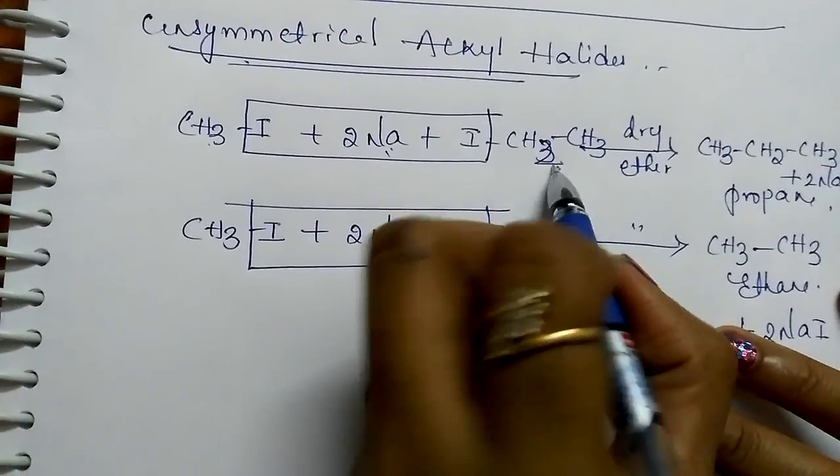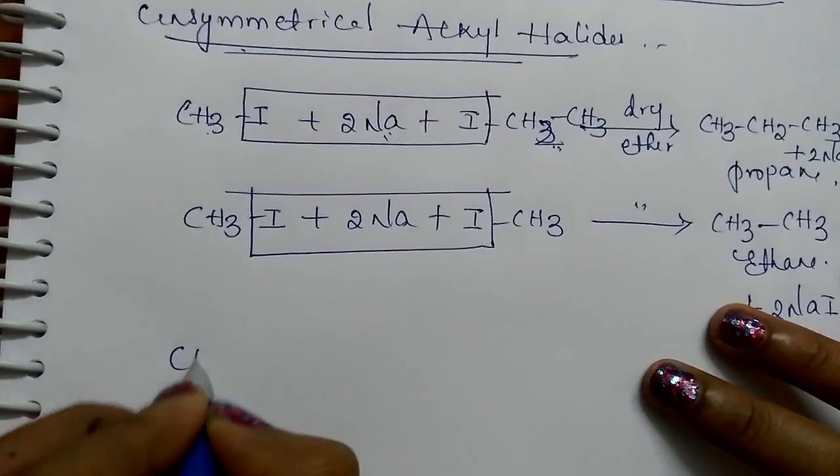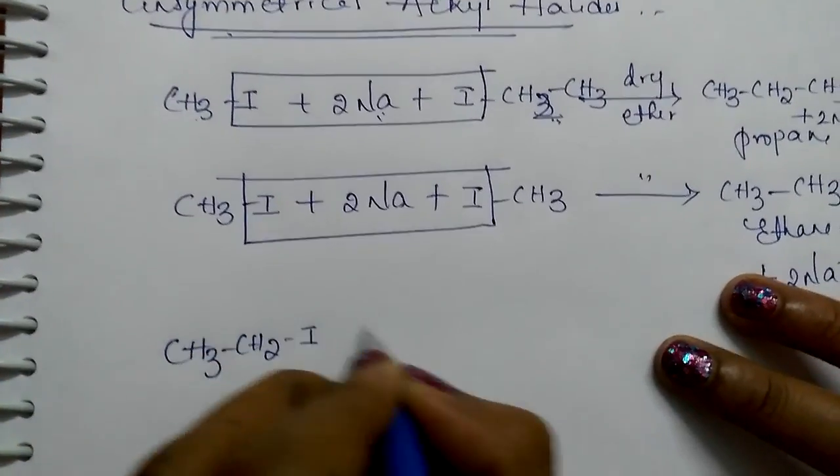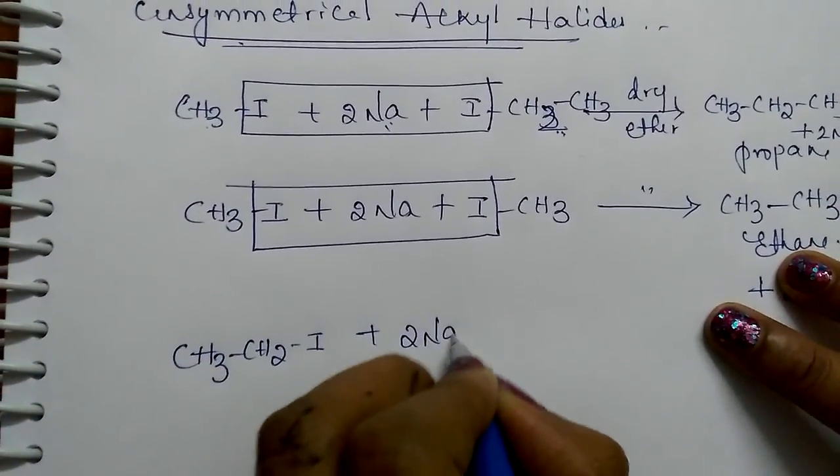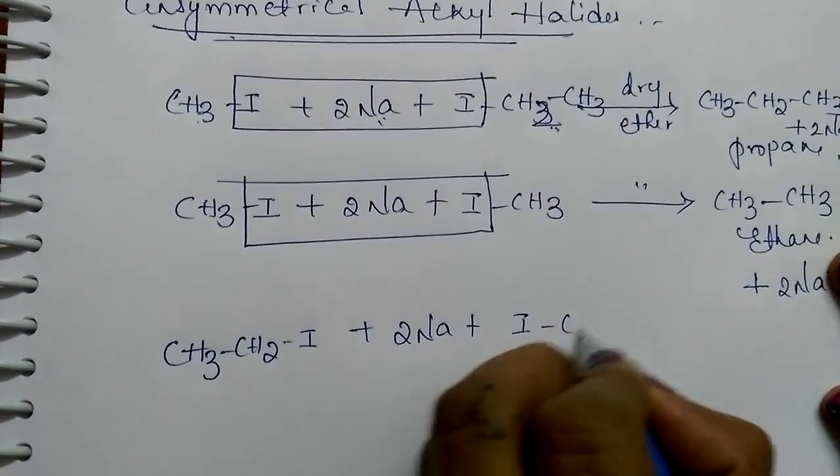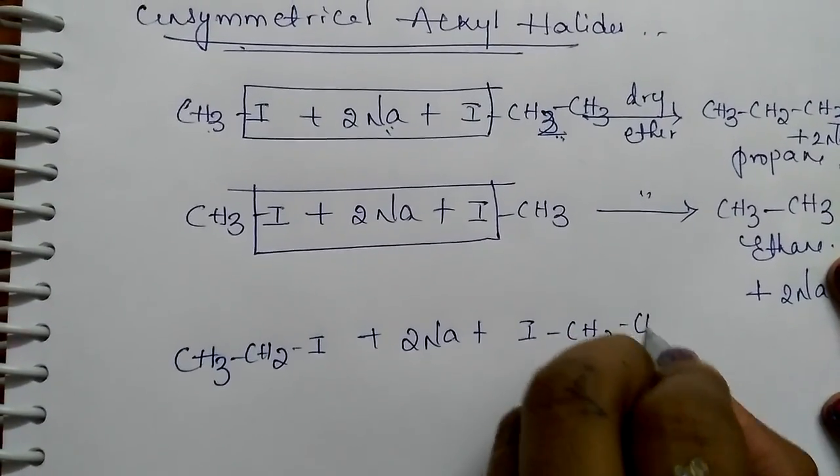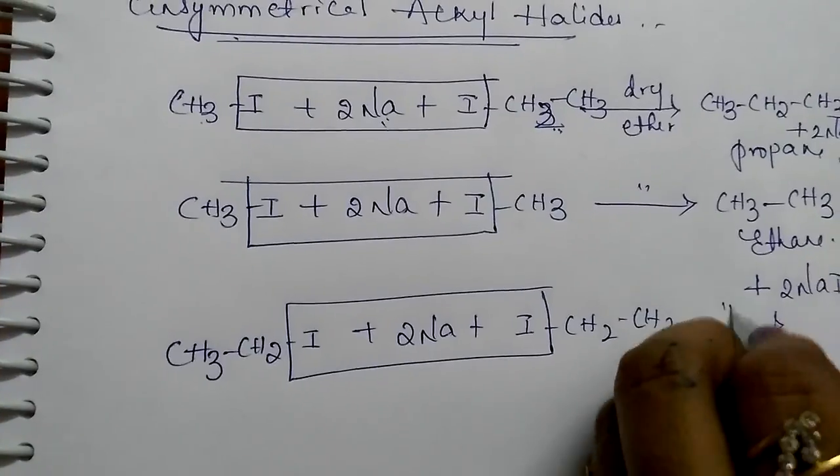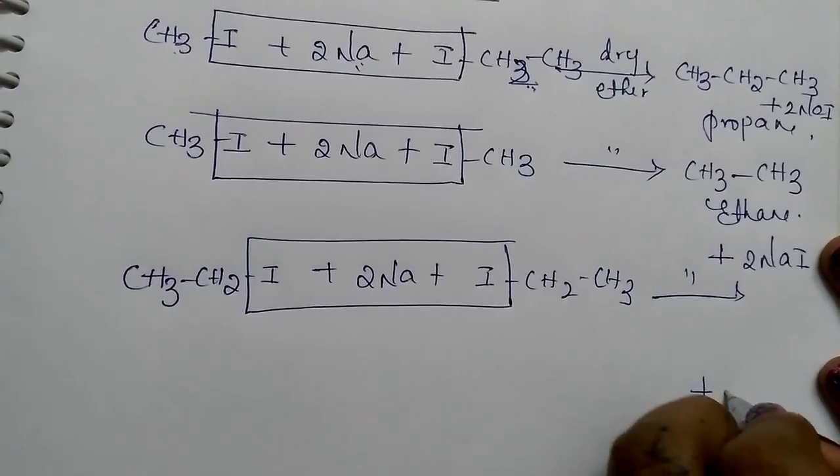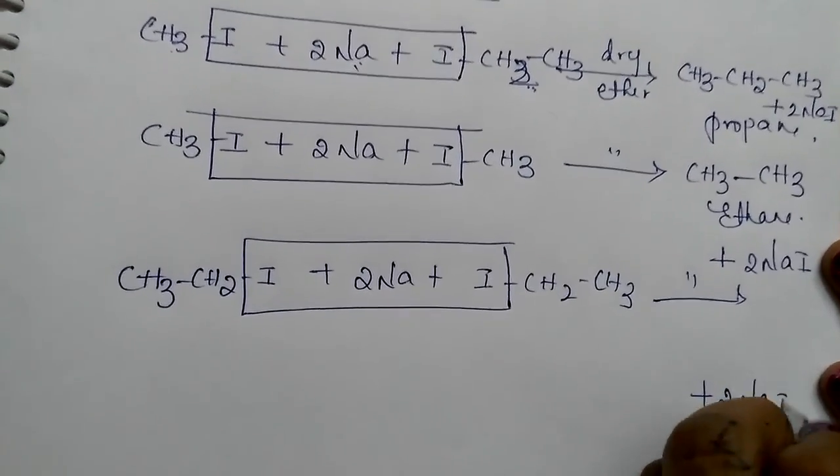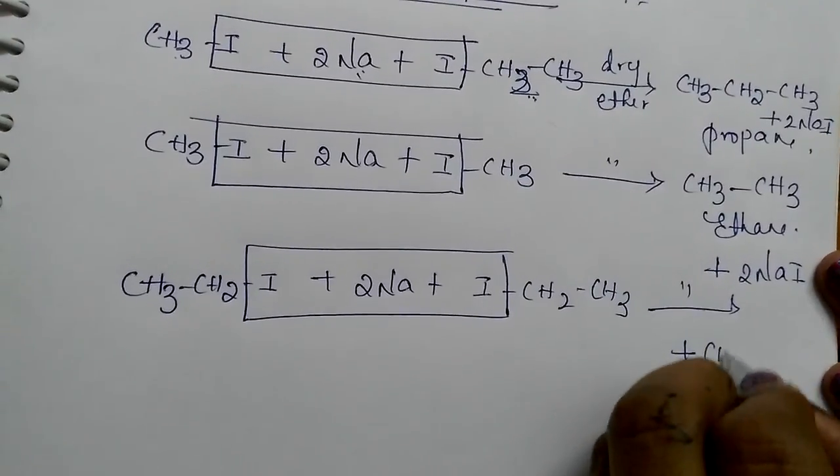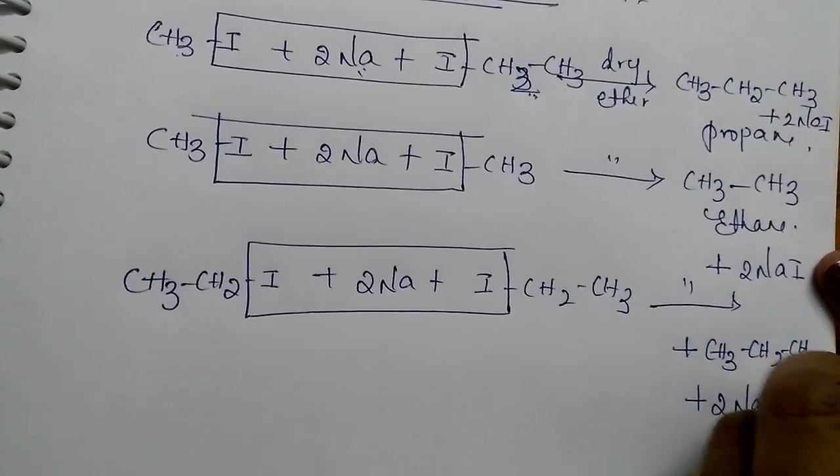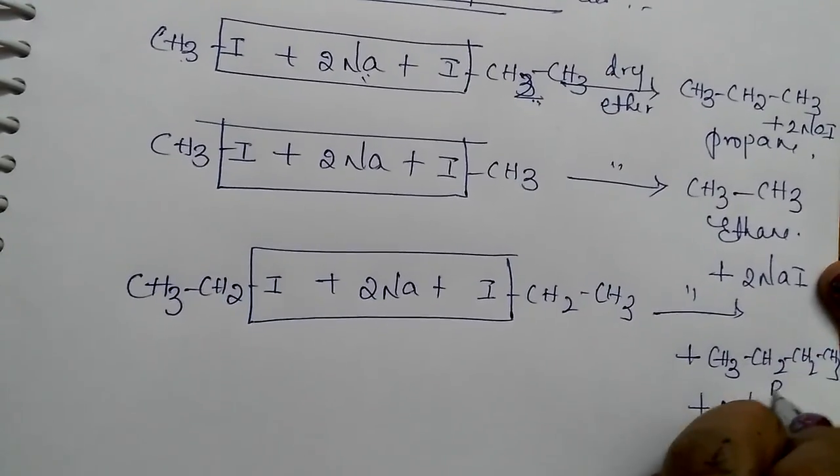This ethyl iodide, 2 moles of ethyl iodide reacts with metallic sodium, then I will be getting butane. 2 moles of NaI will be liberated and CH3-CH2-CH2-CH3 butane is formed.